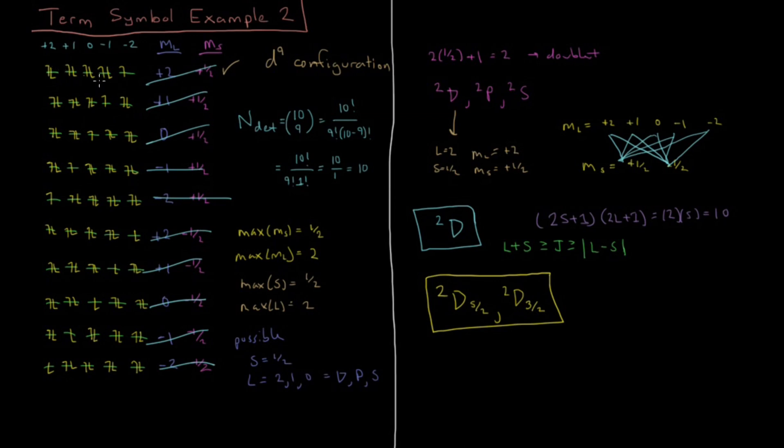One more thing to show: we have these 10 individual electron configurations but two term symbols. Should there be 10 states in these two term symbols? There should be, and there are. The value of M_J goes from J to minus J by integer values. For doublet D 5/2, possible M_J values are 5/2, 3/2, 1/2, minus 1/2, minus 3/2, down to minus 5/2. There are 6 states inside doublet D 5/2.